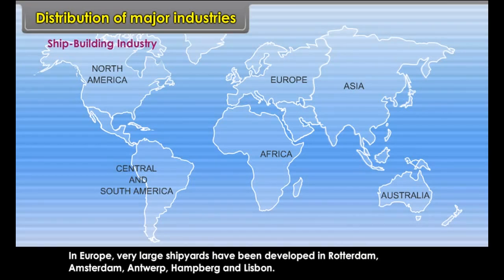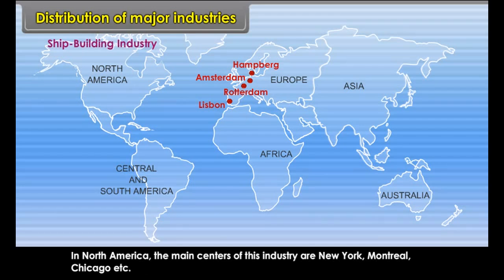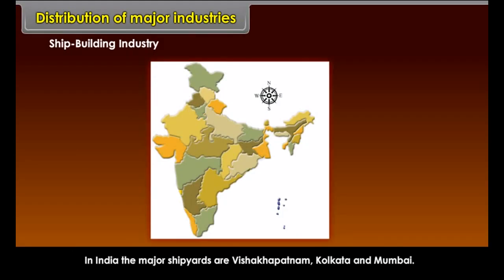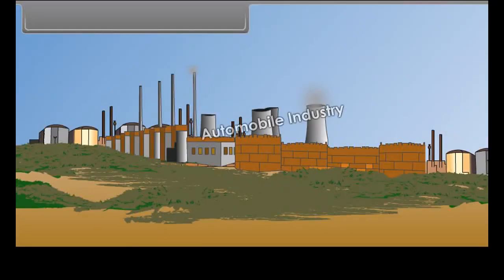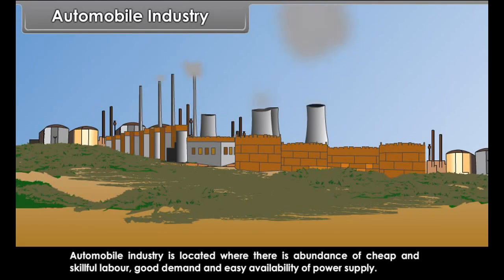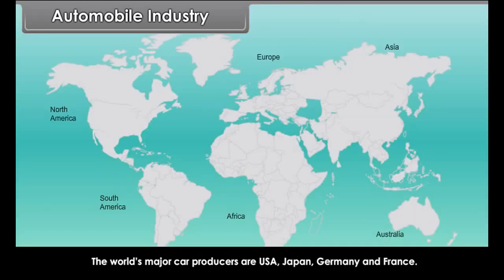Shipbuilding is a worldwide industry, developed where softwood is available, though nowadays a large quantity of steel is also used to build ships. In Europe, very large shipyards have been developed in Rotterdam, Amsterdam, Antwerp, Hamburg, and Lisbon. In North America, the main centres are New York, Montreal, and Chicago. In India, the major shipyards are Vishakhapatnam, Kolkata, and Mumbai.